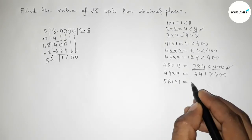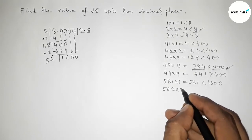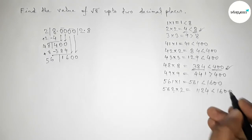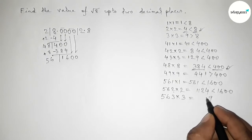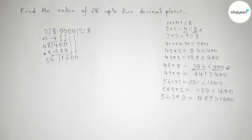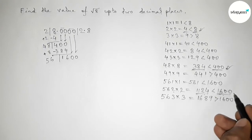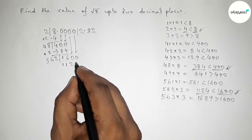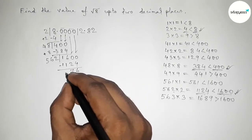Now choose a number beside 56 and multiply by it, less than and almost near 1600. Taking 561 times 1 — less than 1600. Taking 562 times 2: 2 times 2 equals 4, then computing gives 1124, which is less than and almost near 1600. Taking 563 times 3 gives a result greater than 1600. So we take 2, putting it here and writing down 1124. Subtracting gives the remainder, and we continue.